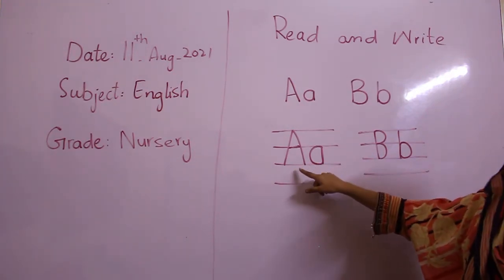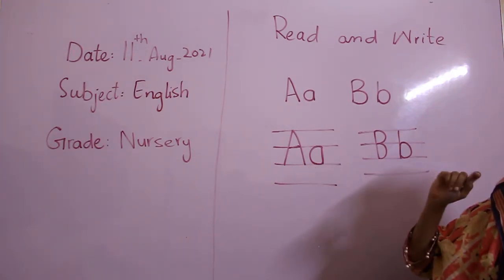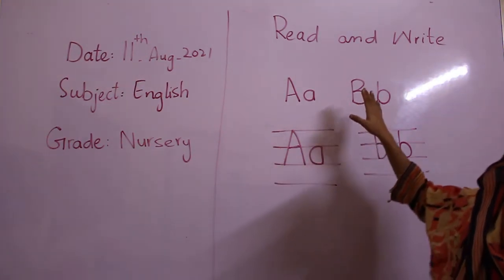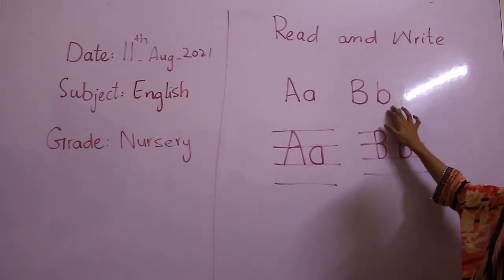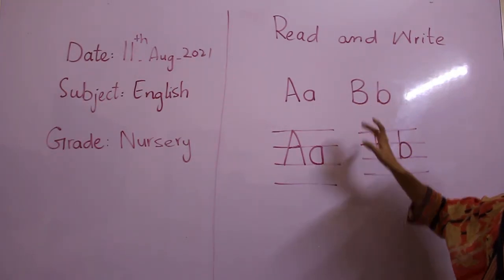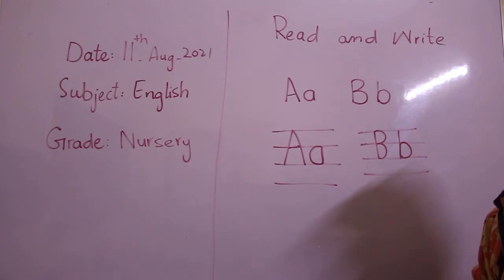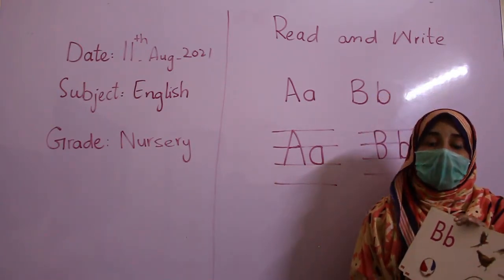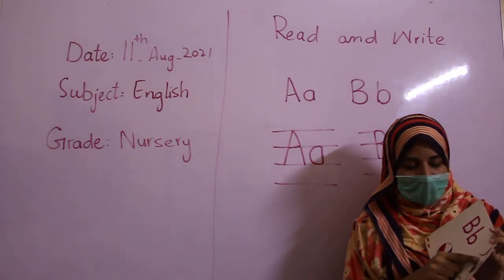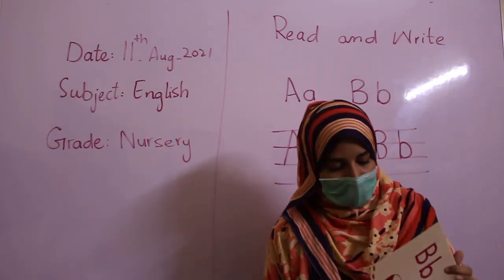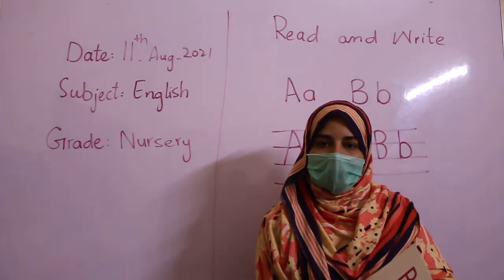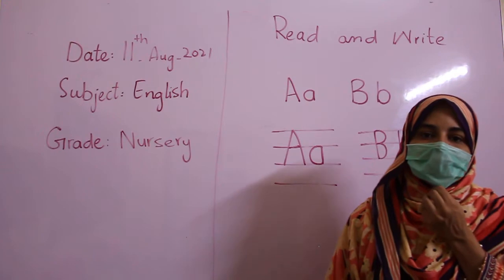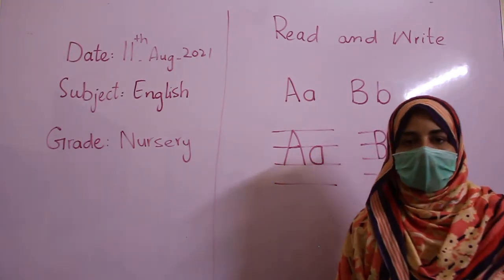We write it in three lines. And we write small a into two lines. Then our today's copy topic is B. B — ball. Here is a picture of a ball. Basket. Purse — these are purses.